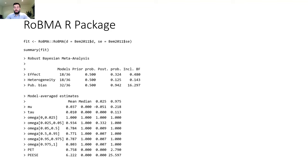With the RoBMA R package, you can specify the default ensemble by simply providing effect sizes and standard errors — for example, here on the infamous Bem 2011 dataset. You fit the model with a simple call, and use the summary function to obtain a default summary. In the first summary table, you see information about the whole model ensemble: 36 models specified, 18 assuming presence of the effect, 18 assuming presence of heterogeneity, and 32 assuming presence of publication bias. The prior model probabilities are equal across the components, and you see the posterior probabilities.